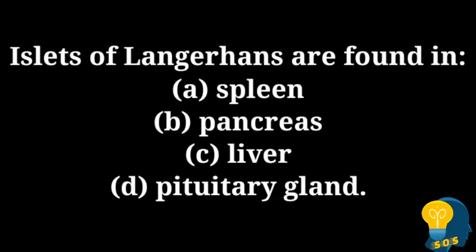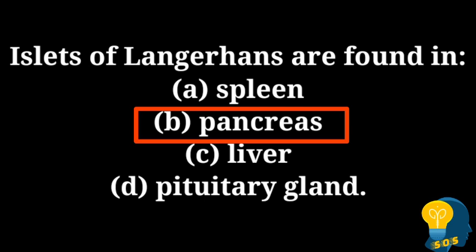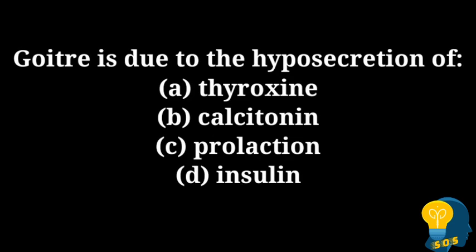The next question is: islets of Langerhans are found in? The options are option A: spleen, option B: pancreas, option C: liver, and option D: pituitary gland. The correct answer is pancreas. The islets of Langerhans are endocrine cells that are scattered throughout the pancreas, so they are present in the pancreas and not in the spleen, liver, or pituitary gland.